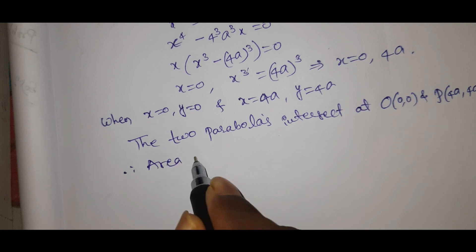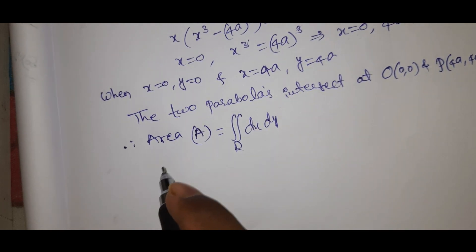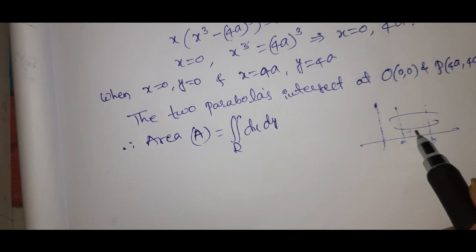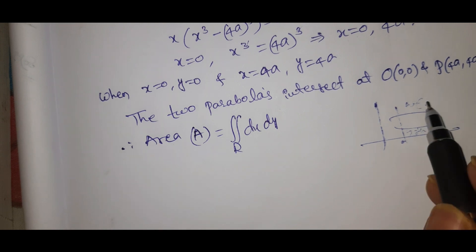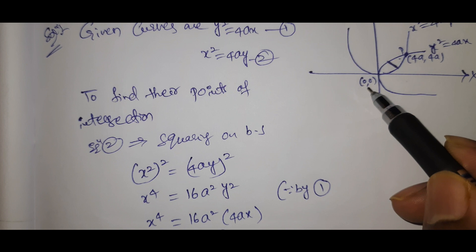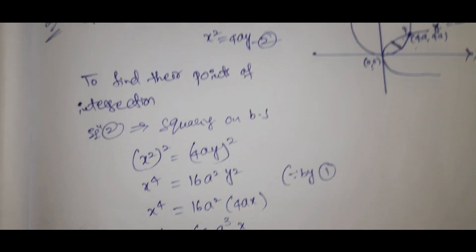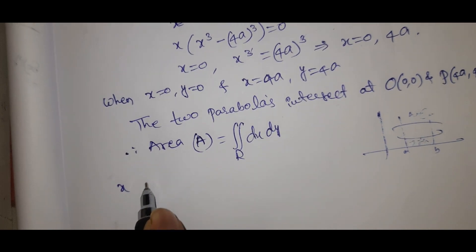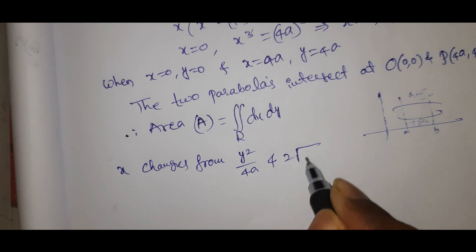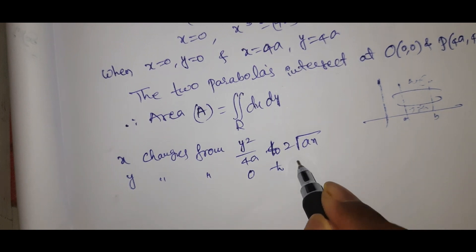Therefore, area A equals the double integral over region R of dx dy. We set up the limits: x changes from 0 to 4a. The limits are y=0 to 4a, with x from y²/4a to 2√(ay).